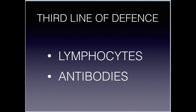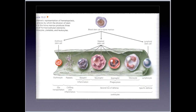A specific response is the third line of defense, where we have our lymphocytes and antibodies. All of our lymphocytes are produced in the bone marrow by blood stem cells. Some stay and mature there and are known as B lymphocytes — there are two types: plasma cells and memory B cells. Others migrate to the thymus to mature and are called T lymphocytes. There are four types: killer T cells, helper T cells, suppressor T cells, and memory T cells.